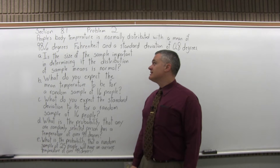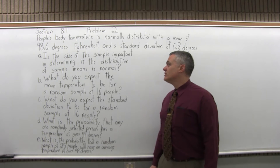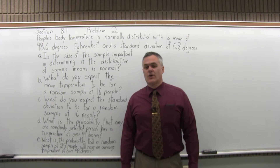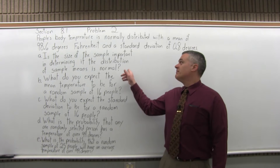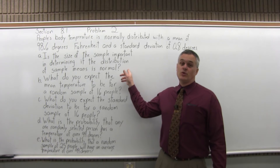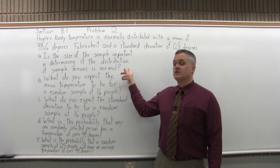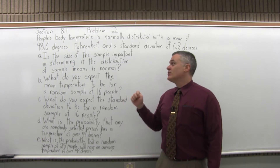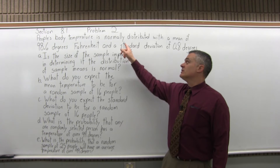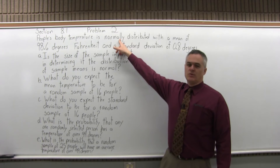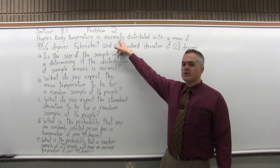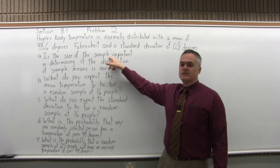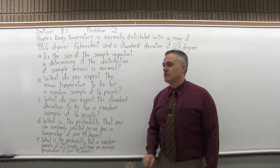Part A: is the size of the sample important in determining if the distribution of sample means is normal? Sometimes you need a big enough sample — 30 or more — to ensure that your distribution of sample means is normal. In this case, we don't. The answer is no. The reason is the population we're sampling from is normally distributed. If the population is normally distributed, it doesn't matter how big your sample is — the distribution of sample means will be normally distributed.